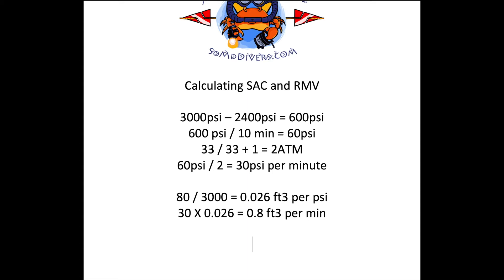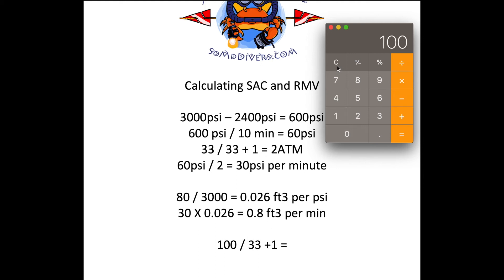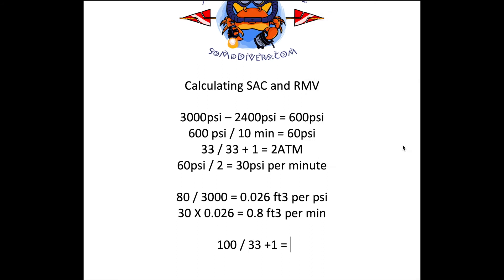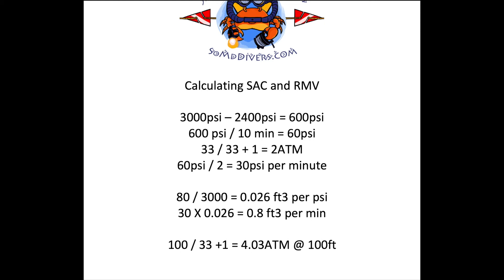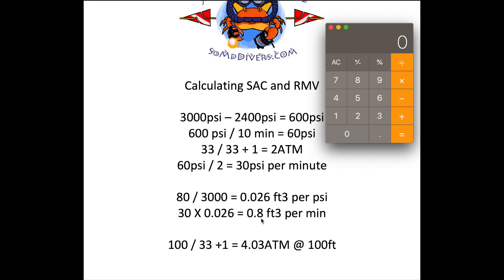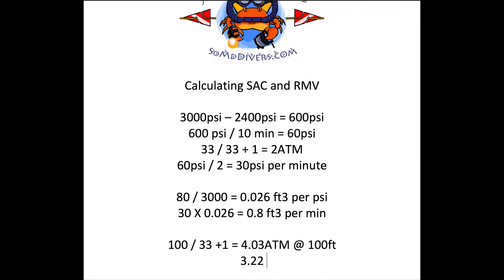Now you can easily calculate how much gas you use per minute at depth. All you have to do is figure out the atmospheres at your planned dive depth. For instance, the Megalodon ledge is 100 feet deep: divide 100 by 33, which equals 3.03, then add 1 for the surface atmosphere — giving 4.03 atmospheres at 100 feet. Take your 0.8 cubic feet per minute at the surface and multiply by 4.03 atmospheres, and you find you're using 3.22 cubic feet per minute of gas at 100 feet.